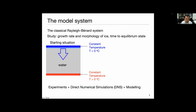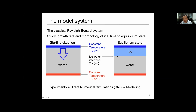We use the classical Rayleigh-Bénard convection system to study the growth rate, the morphology of the ice, and the time to equilibrium state. We keep the top plate temperature below zero degrees and the bottom plate temperature above zero degrees. We start the system with warm conditions - the working fluid temperature equals the bottom plate temperature - then we cool the top plate. Ice forms on the top surface and grows. Our approach combines experiment, direct numerical simulations, and theoretical modeling.